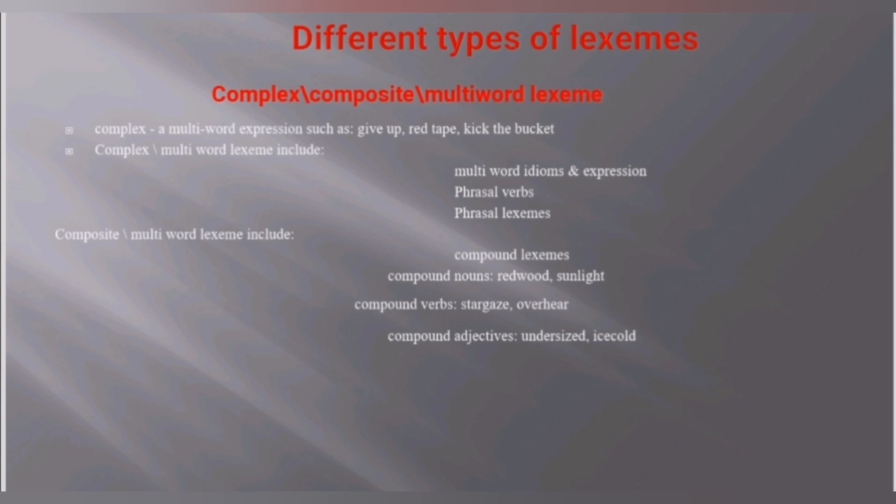You already know what a complex lexeme is and what it includes. Now, this is the compound lexeme. Compound nouns include examples like 'redwood' and 'sunlight.' These are compound words — you have a single lexeme but it contains more words combined together.